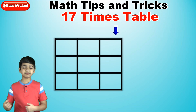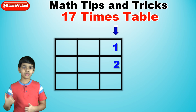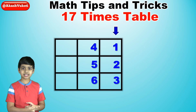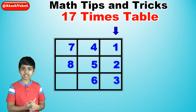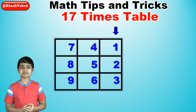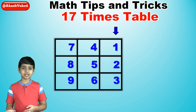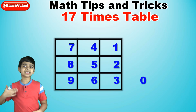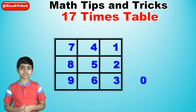So: 1, 2, 3, 4, 5, 6, 7, 8, 9. And then we write a 0 outside the box.